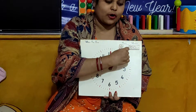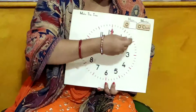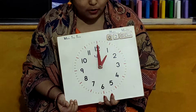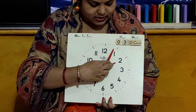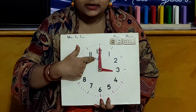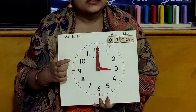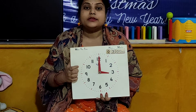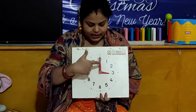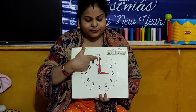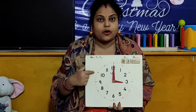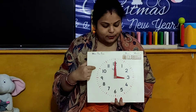Now children, our clock will show the time 3 o'clock. So children, when the hour hand is on number 3 and minute hand is on number 12, the clock is showing the time 3 o'clock. Hour hand is on number 3 and minute hand is on number 12. The time is 3 o'clock.